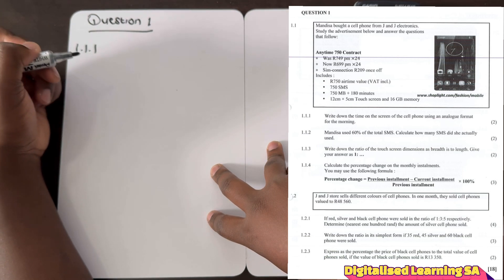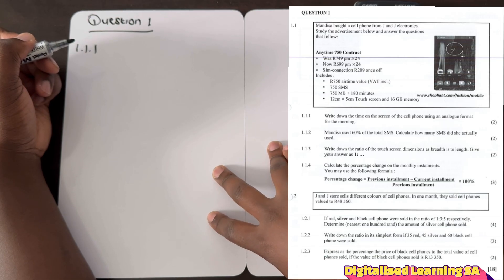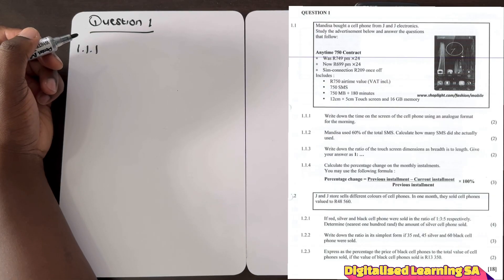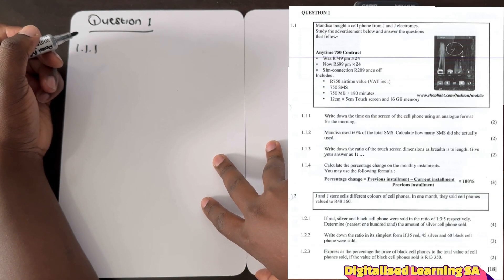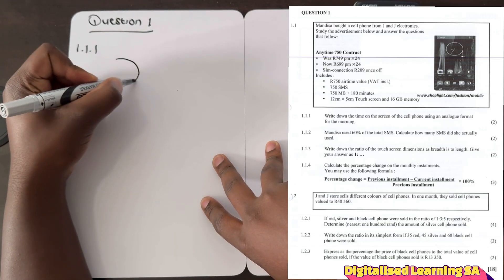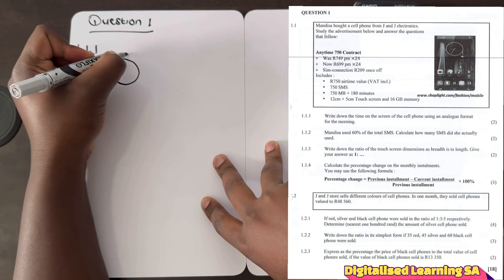This deal also includes 75 rand airtime and 75 SMS as well as 750 MB. To answer the first question, the first question is write down the time on the screen of the cell phone using an analog format for the morning. If you check on the